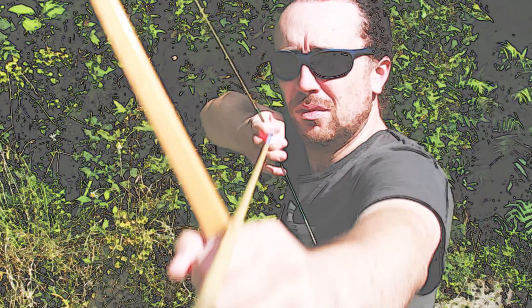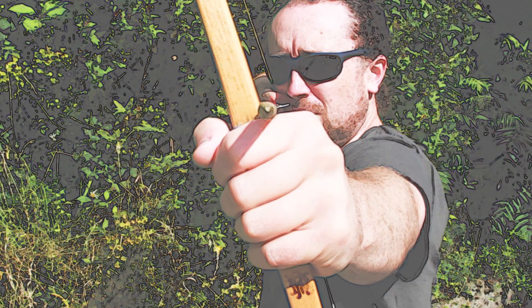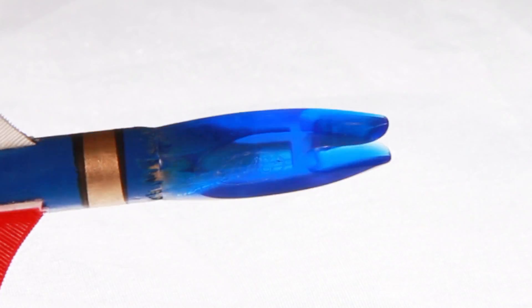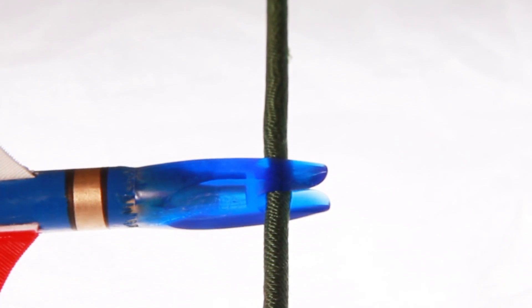But what of its anatomy? What are the basic bits made up of and what are they called? Starting at one end we have the nock, a bright colored plastic piece that allows us to lock the arrow onto the bowstring, keeping it in place as we draw back.